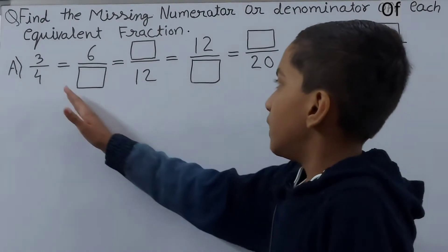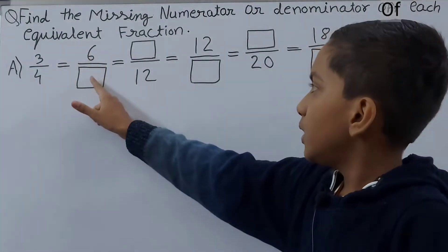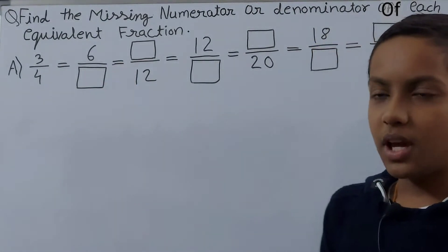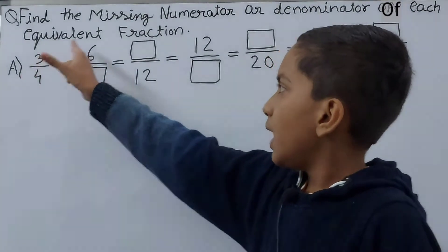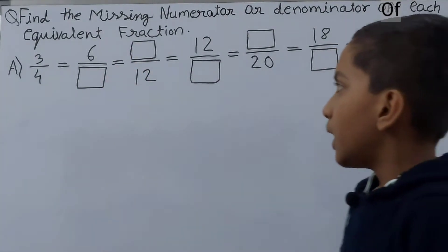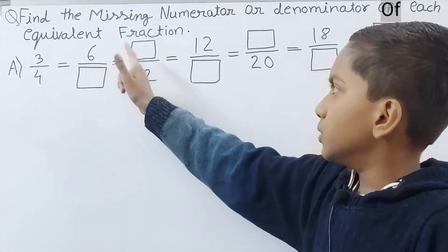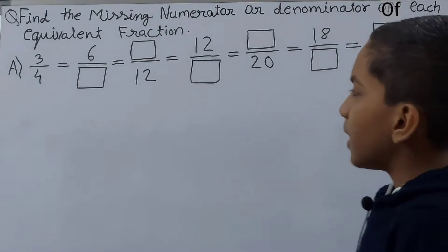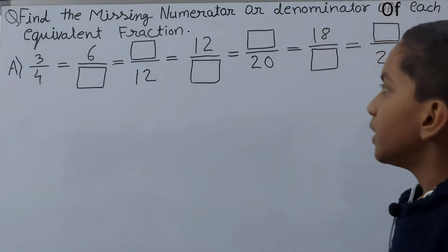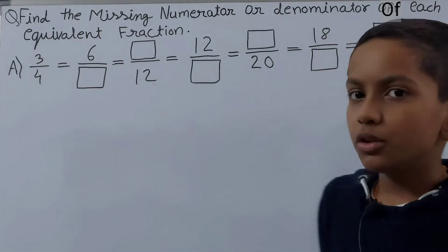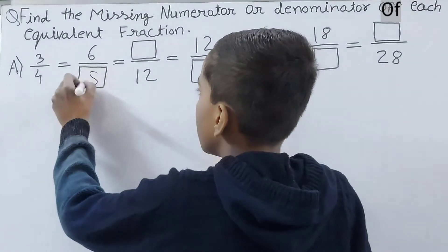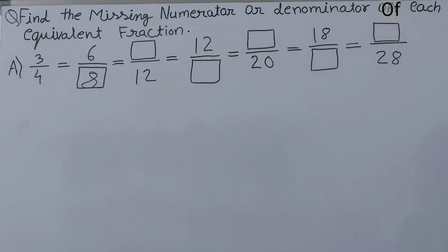Let's start from the beginning. We have 6/□ — we have the numerator but not the denominator. We look at the relation between 3 and 6: 3 times 2 is 6. So we multiply both numerator and denominator by 2. Therefore 2 times 4 is 8, so the box will be 8.